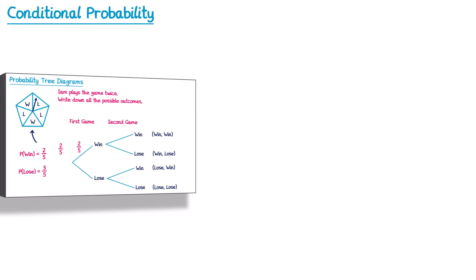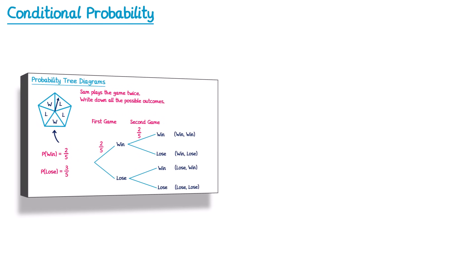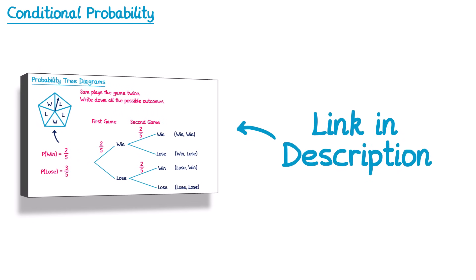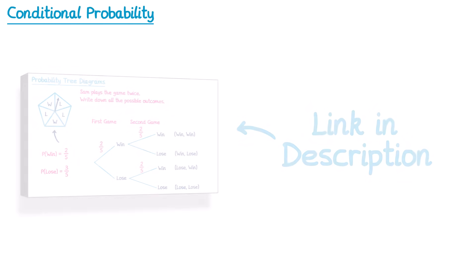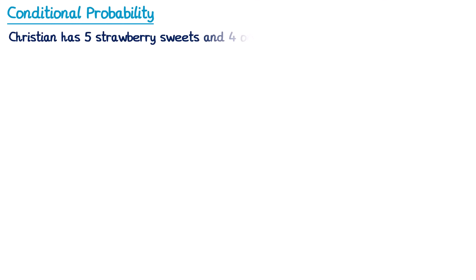In this video we're going to look at conditional probability. This is going to follow on from my previous video on probability tree diagrams, so if you haven't done so I'd recommend watching that first. As always there's a link in this video's description. Let's have a look at a question.